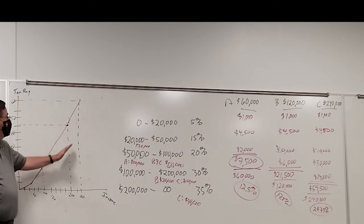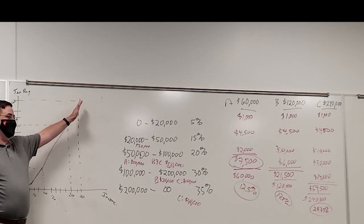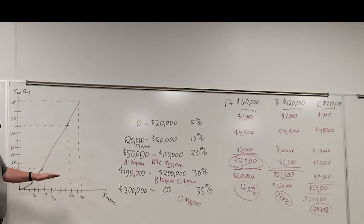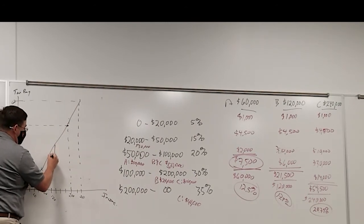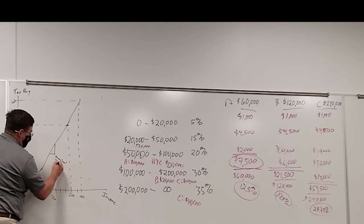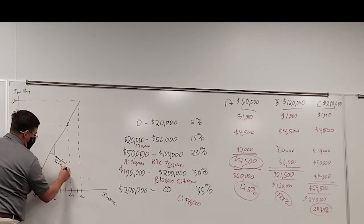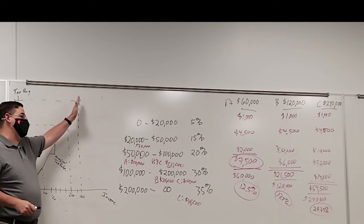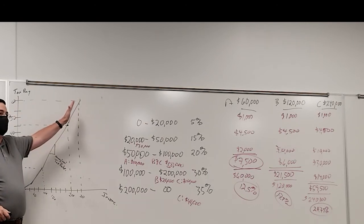What can we say about the slope of each of these lines? It's gradually getting steeper. The slope of this line is gradually getting steeper, which illustrates the slope of each of these lines is the marginal tax rate. So as the marginal tax rate goes up, the higher the income you go, the steeper the line gets.